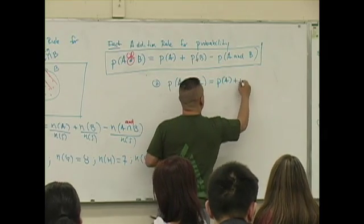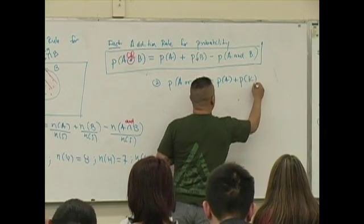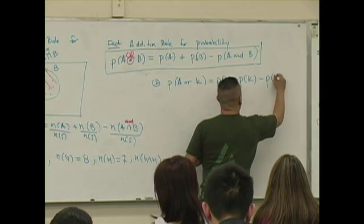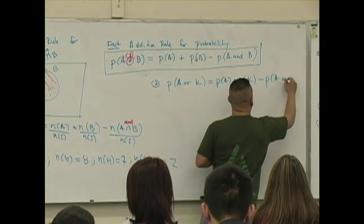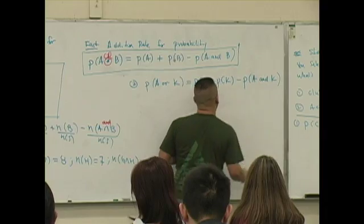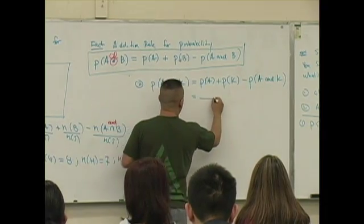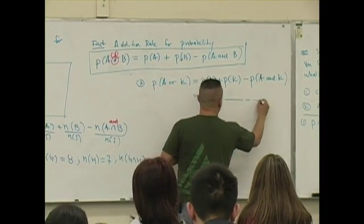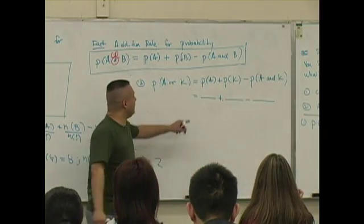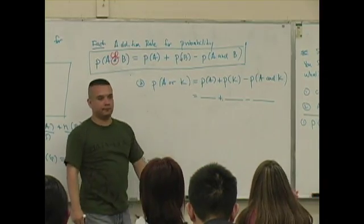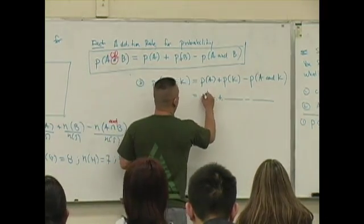What's the likelihood of selecting an ace? Four over fifty-two.